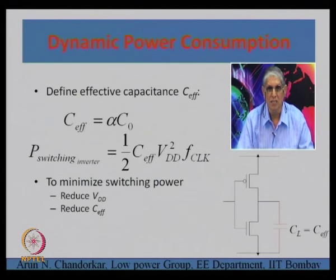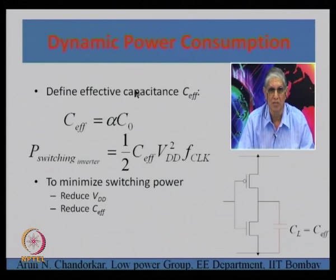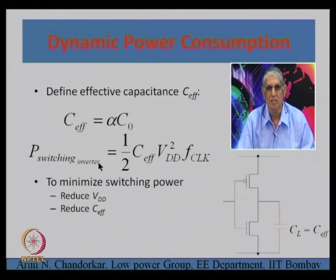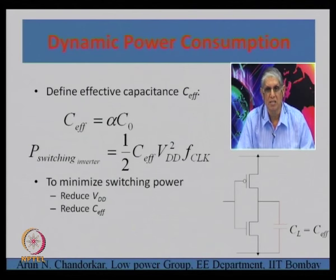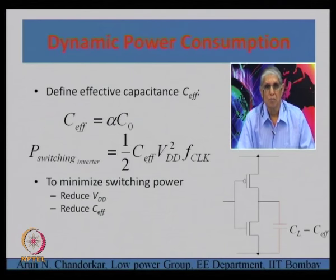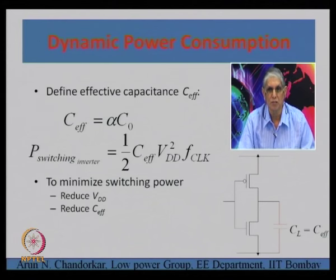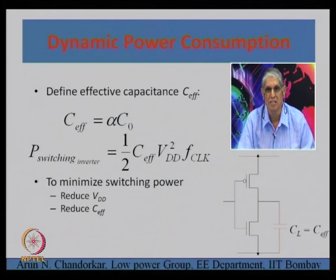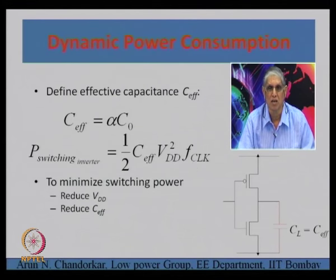The effective load capacitance is the output capacitance times alpha. Please remember alpha is not a constant quantity — it varies with the data, and therefore C_effective also varies with the data. The switching power or dynamic power can be expressed as P = (1/2) · C_effective · VDD² · f_CLK, where f_CLK is the clock frequency at which the data is changing. To reduce dynamic power, since f_CLK cannot be reduced and VDD cannot easily be reduced due to noise considerations, the main handle is reducing C_effective.